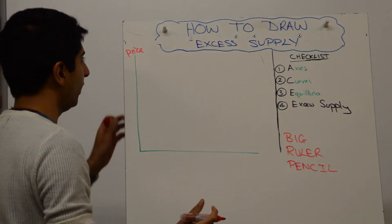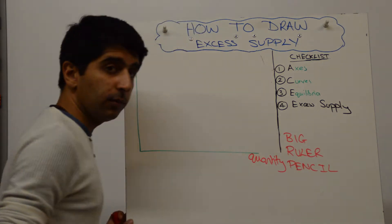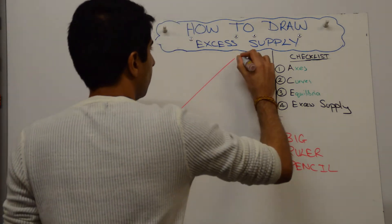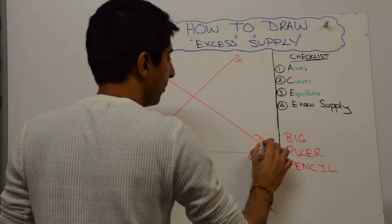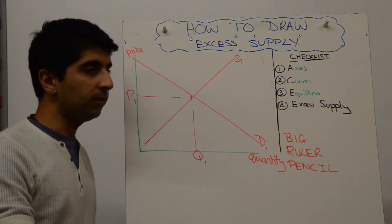We want to label the axes first, price and quantity. Next thing, we want to draw an equilibrium, demand and supply, and label as you go along. Equilibrium price and quantity of P1 and Q1. Very good.